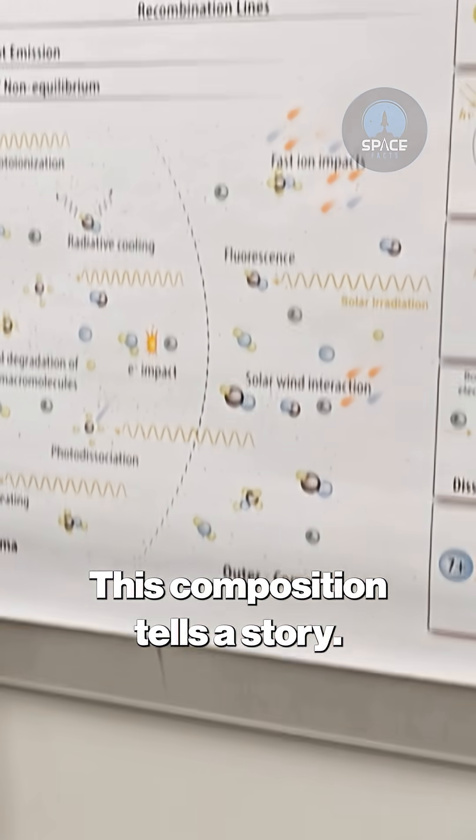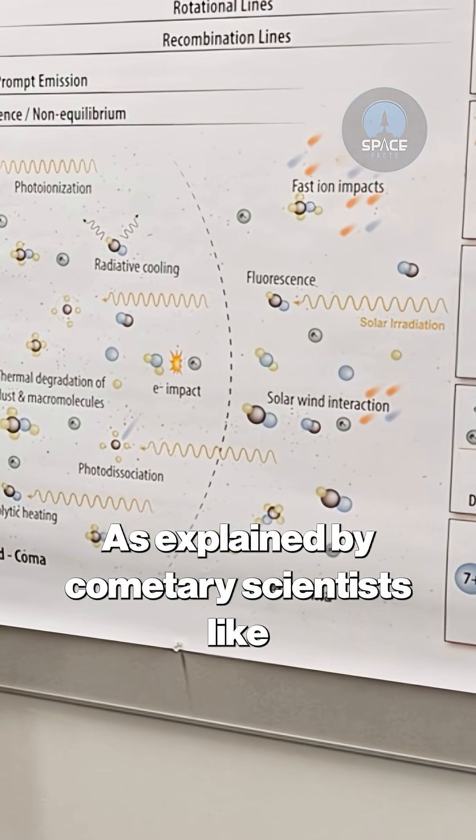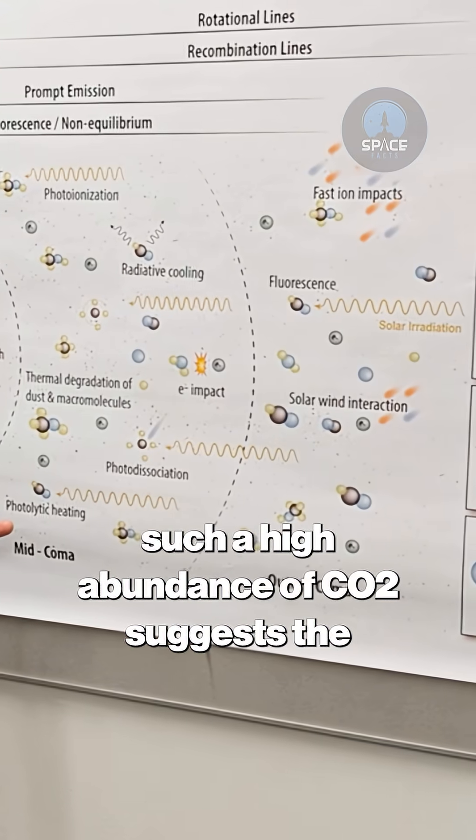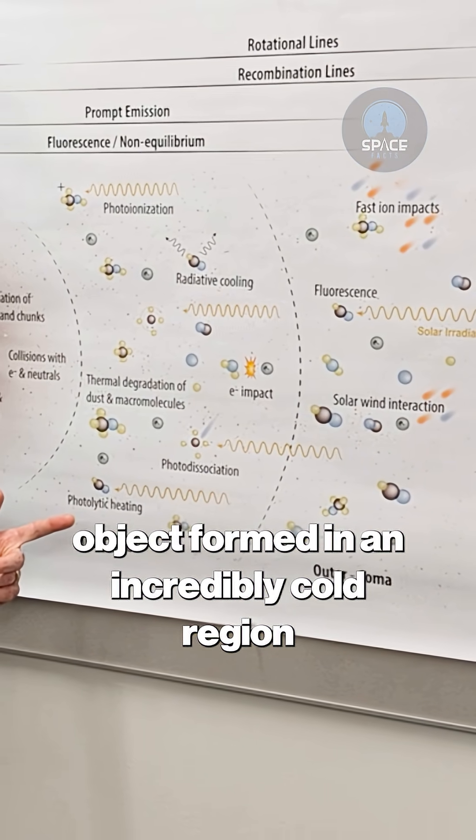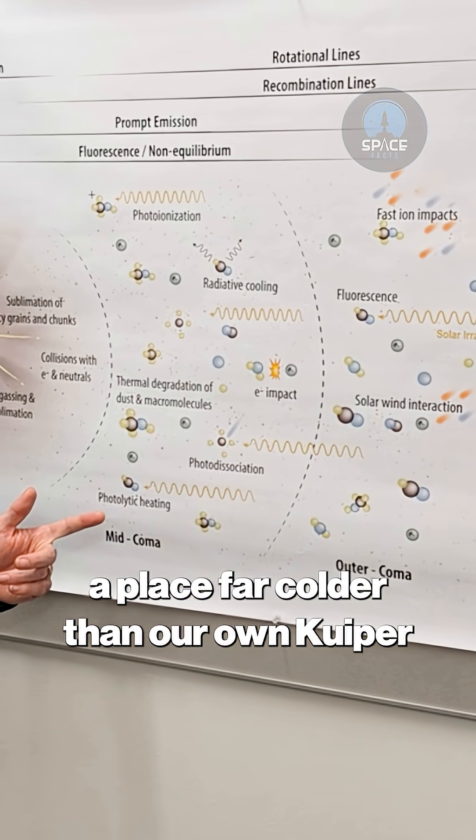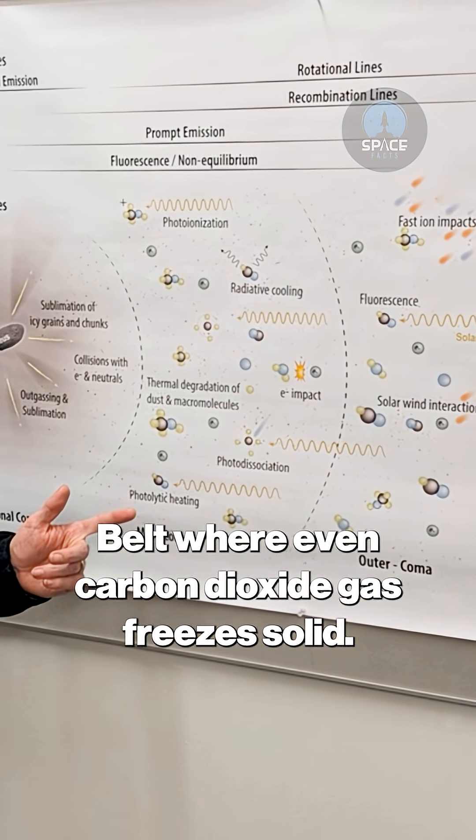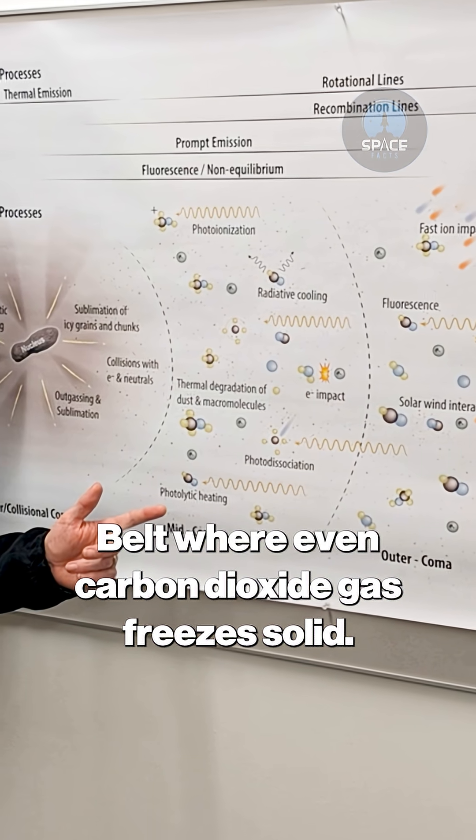This composition tells a story. As explained by cometary scientists like Martin Kordner, such a high abundance of CO2 suggests the object formed in an incredibly cold region of its home star system, a place far colder than our own Kuiper Belt where even carbon dioxide gas freezes solid.